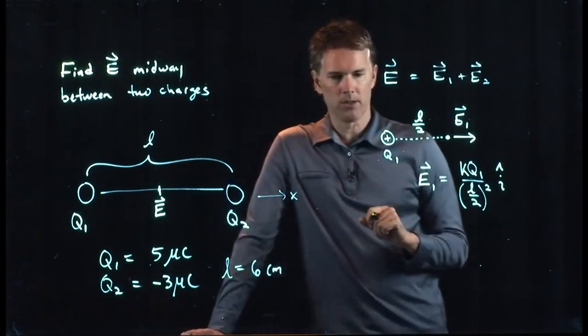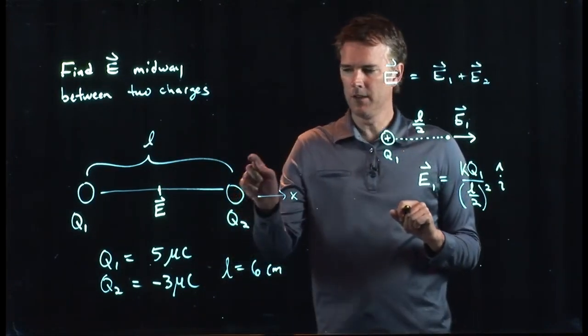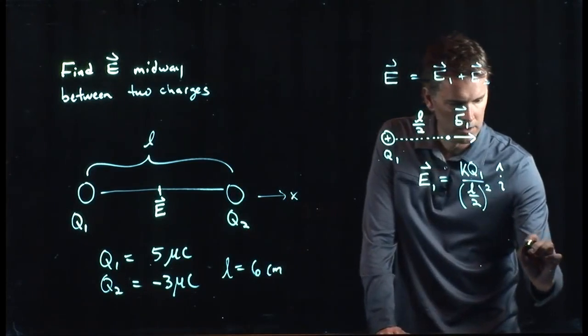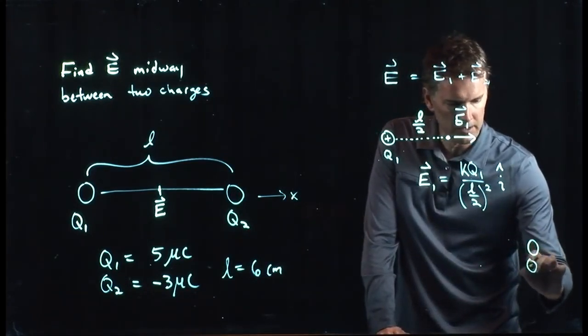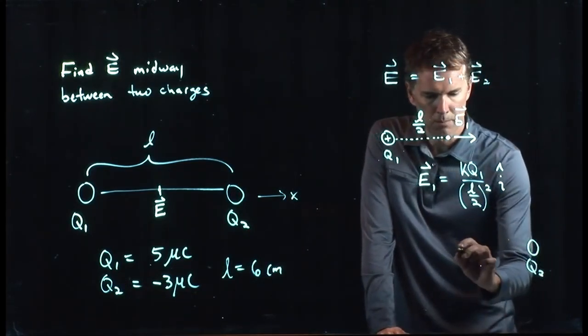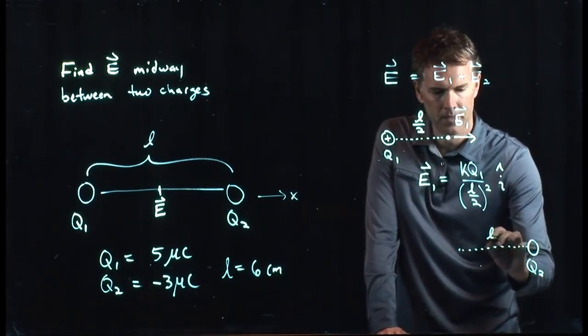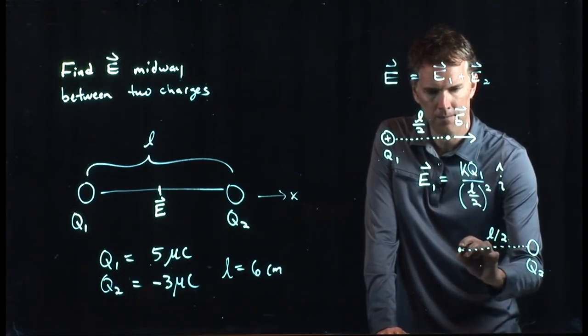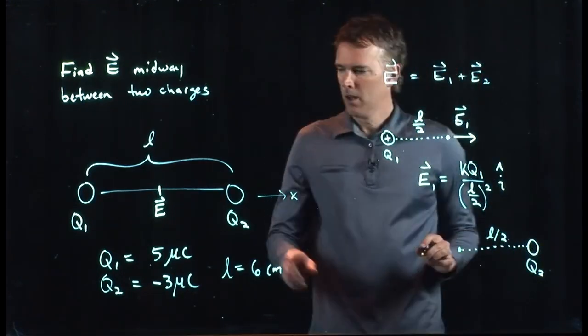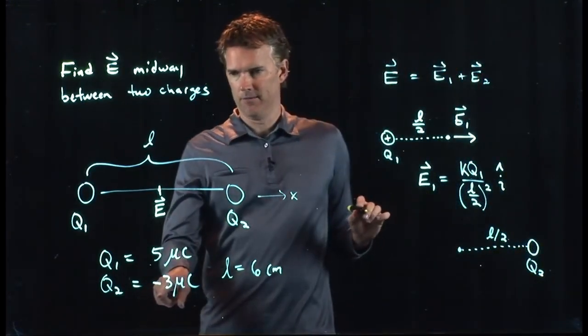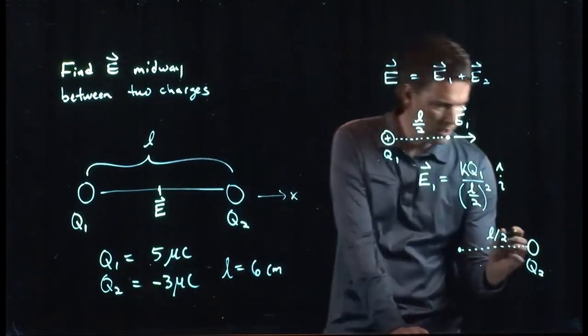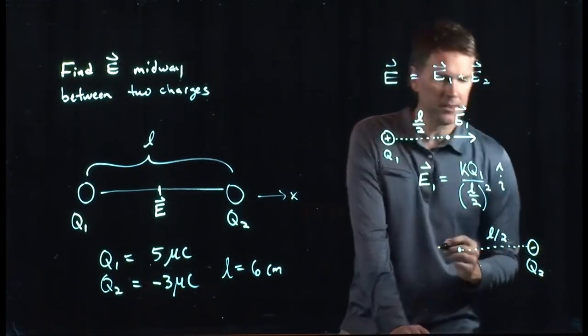What about the E field due to Q2? Q2 is sitting right there. Our point of interest is now to the left of it, a distance L over 2 away. And we said that Q2 was negative, right? Q2 is a negative charge, so we put a little negative sign right there.